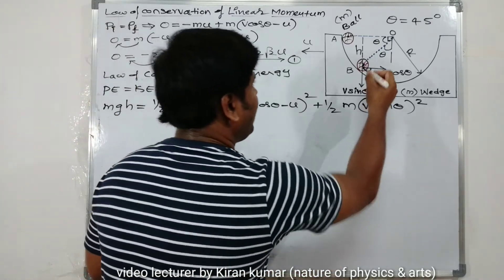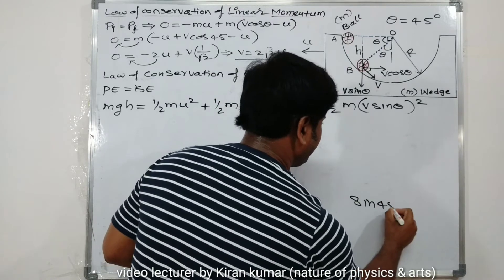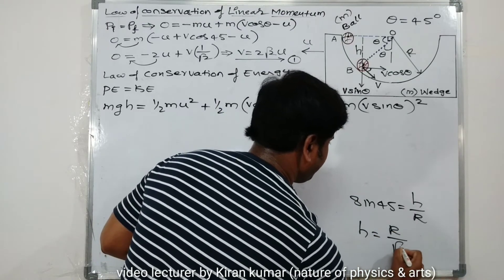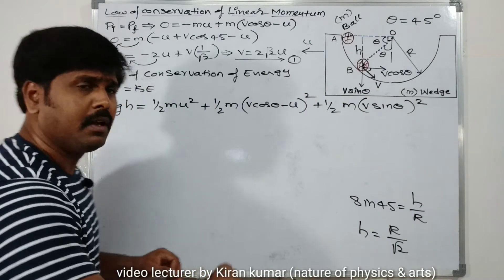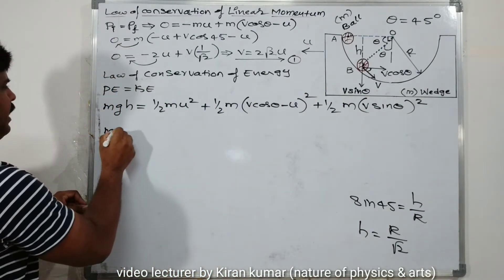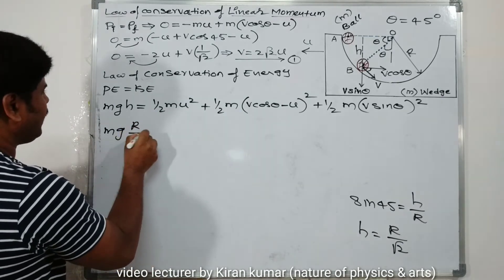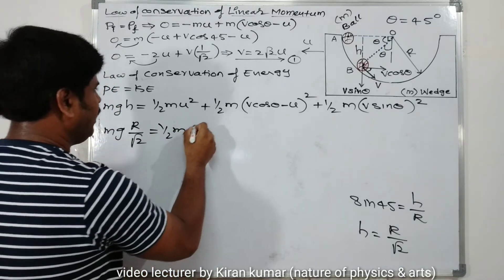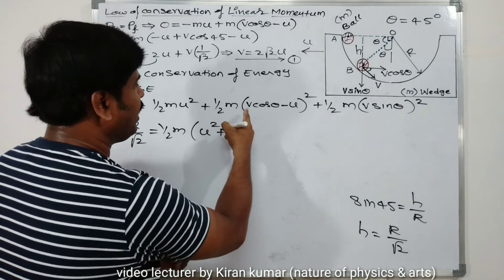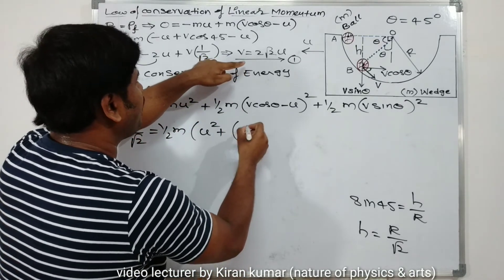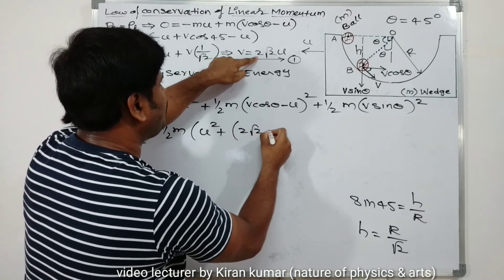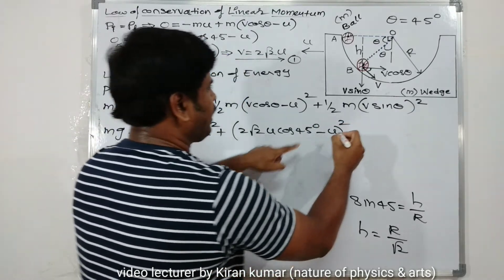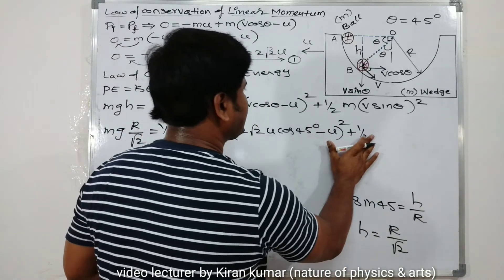Substituting the values: h = r/√2, so mgh = mg·r/√2. With m common, this gives g·r/√2. Replacing v with 2√2·u from Equation 1: the horizontal term becomes (2√2·u·cos 45° − u)² = (2√2·u·(1/√2) − u)² = (2u − u)² = u². The vertical term becomes (2√2·u·sin 45°)² = (2√2·u·(1/√2))² = (2u)² = 4u².